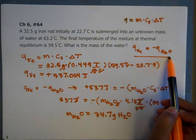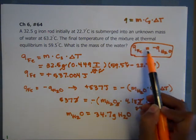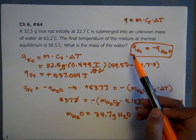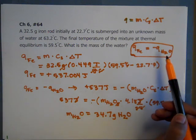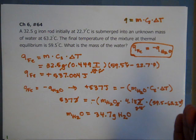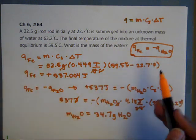So once again, make this connection. Q of one equals the Q of the other of what is being transferred. They just are going to have opposite signs by definition. Whatever got absorbed or released is going to be the opposite in the other part of the system.